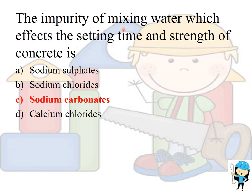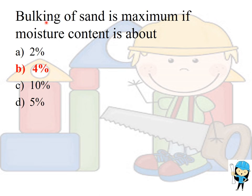The impurity in mixing water which affects the setting time and strength of concrete is sodium carbonates and bicarbonates of sodium. Bulking of sand is maximum if the moisture content is above 4%. Bulking of sand is defined as the increase in the volume of sand due to an increase in moisture content.